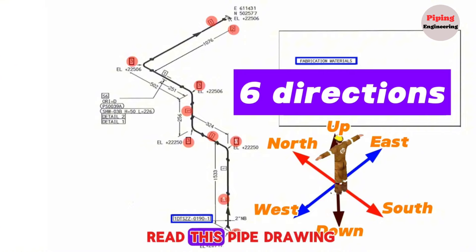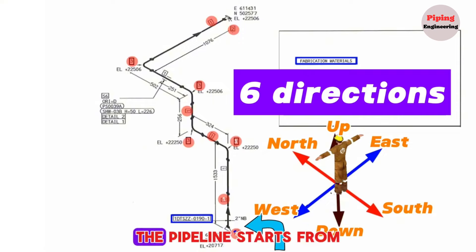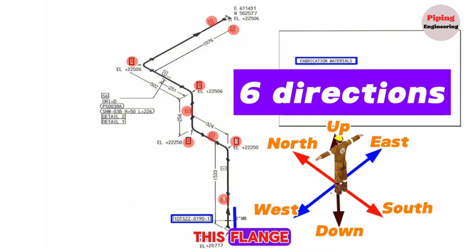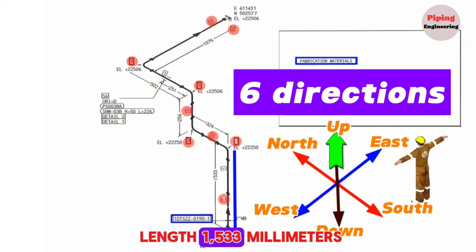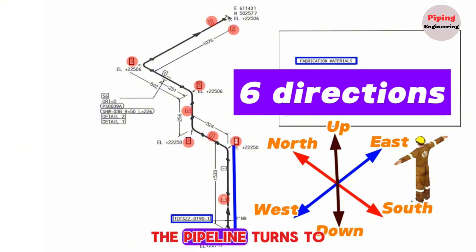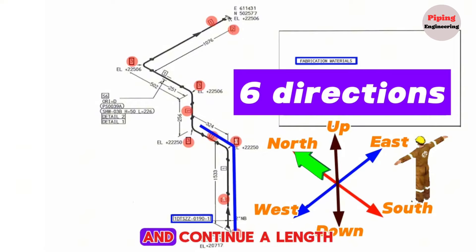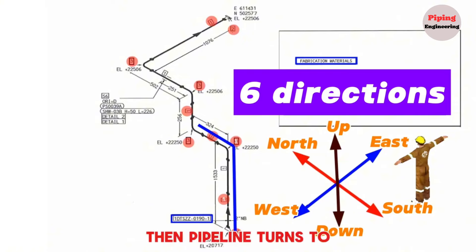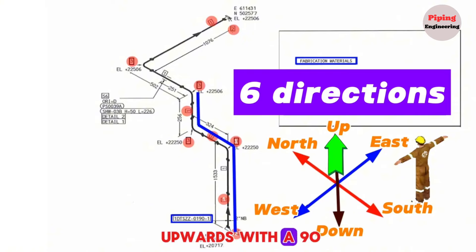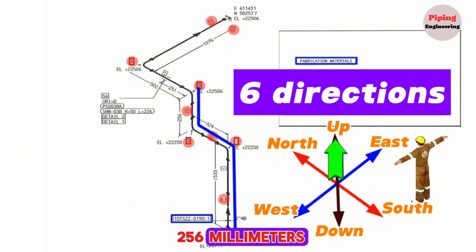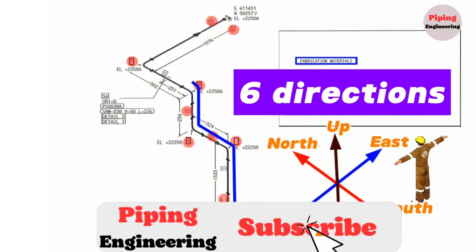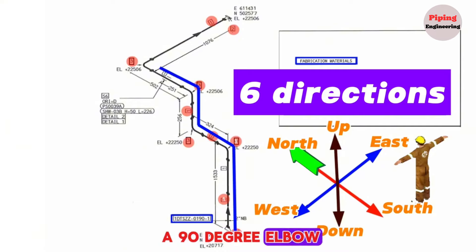We will start reading this pipe drawing from the starting point. The pipeline begins from this flange and extends upwards a length of 1533 millimeters. At this point, the pipeline turns northward with a 90-degree elbow and continues a length of 324 millimeters. The pipeline again turns northward with another 90-degree elbow and continues a length of 502 millimeters.